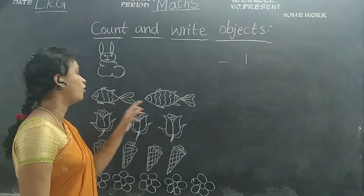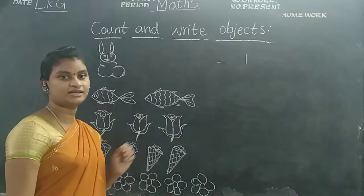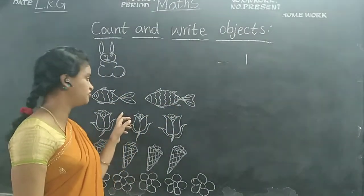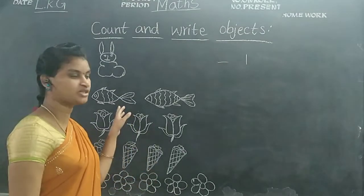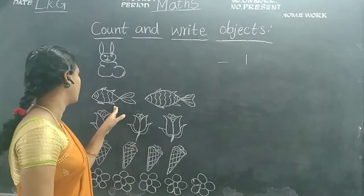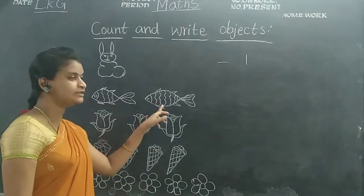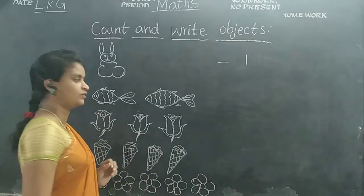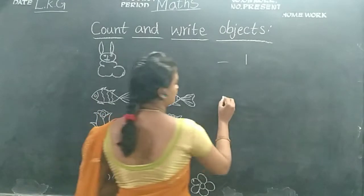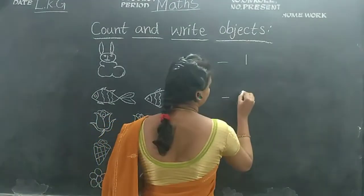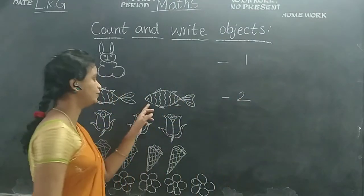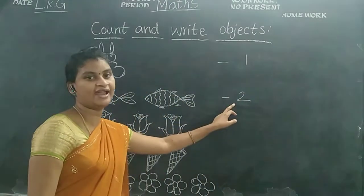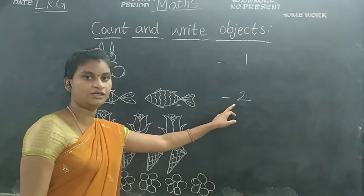Next children. How many are there children? Fishes. How many are there? One, two. Okay children. You should write number two.